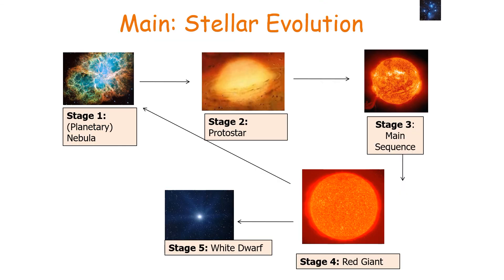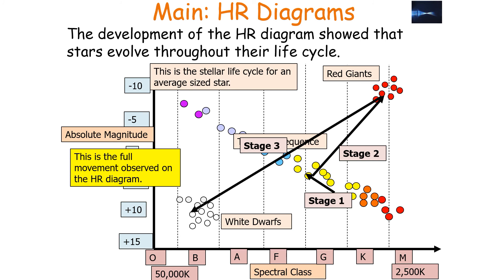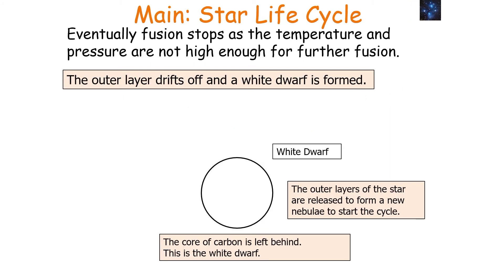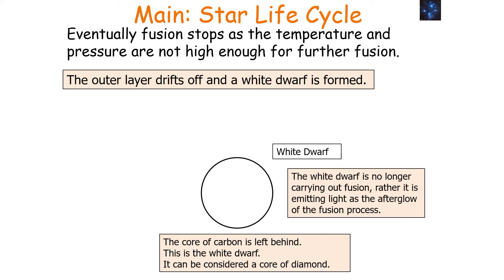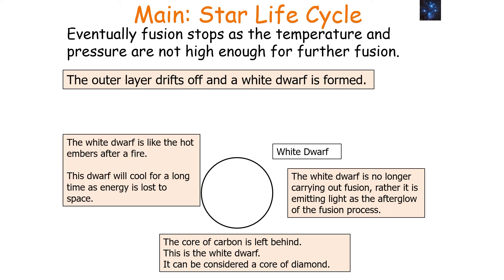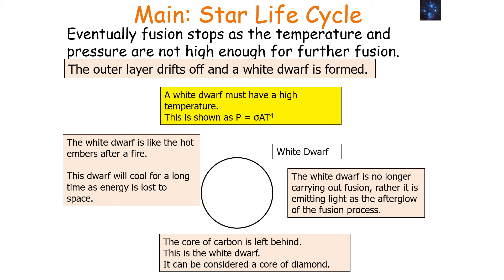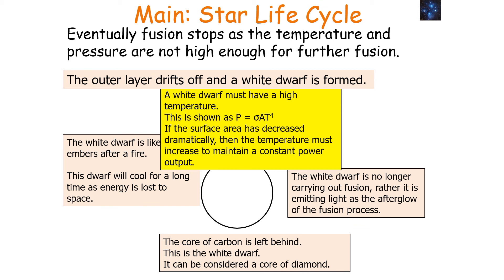This leads to a white dwarf forming. This full movement can be observed on the Hertzsprung-Russell diagram: stage one is the main sequence star, stage two is when it becomes a red giant, and stage three is when it becomes a white dwarf. The white dwarf is a core of carbon left behind after fusion — it can be considered a core of diamond because it's carbon under high pressure and temperature. A white dwarf is like the hot embers after a fire and will cool down for a long time as energy is lost to space. It must have a high temperature because if the surface area has decreased dramatically then the temperature must increase dramatically to maintain a constant power output, as shown by P = σAT⁴.